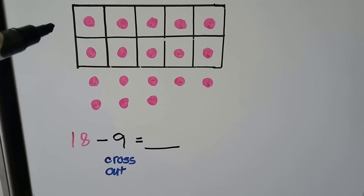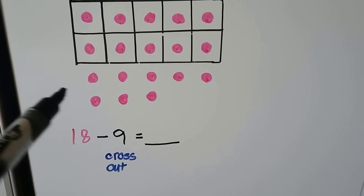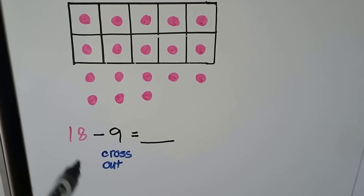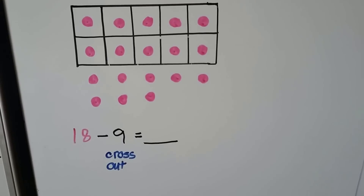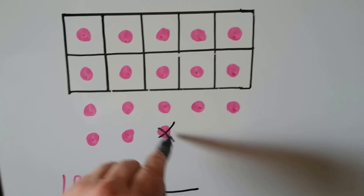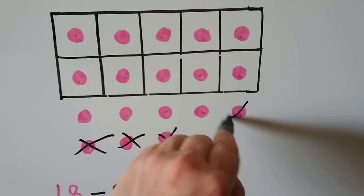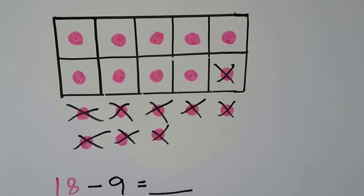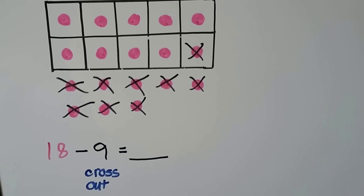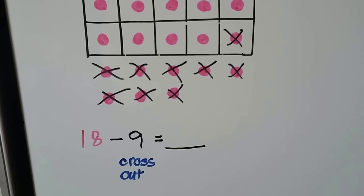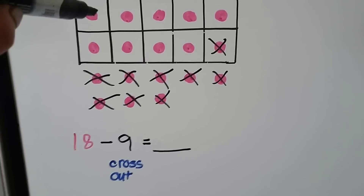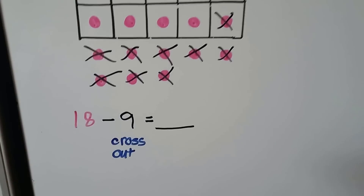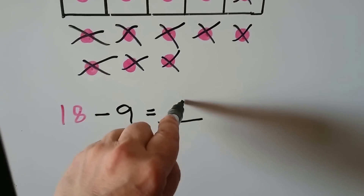Here we have a 10 frame that's full — 10, eleven, twelve, thirteen, fourteen, fifteen, sixteen, seventeen, eighteen. We need to subtract 9, so we can cross out 9: one through nine. How many counters are left? One less than 10 is 9 — one through nine. 18 minus 9 is 9. And 9 plus 9 is 18.